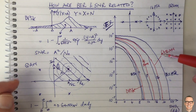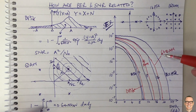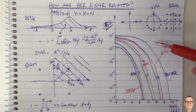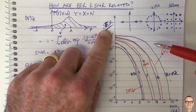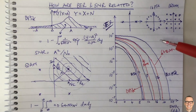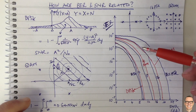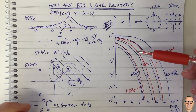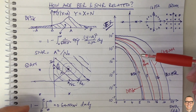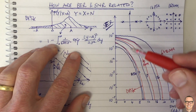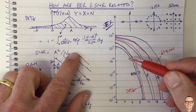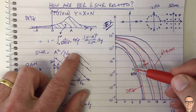Hopefully this has given you some insights into the relationship between the bit error rate, symbol error rate, and the signal-to-noise ratio. If you found it useful, please like the video — it helps others to find it — subscribe to the channel, and check out the web page for more videos with a full categorized list.